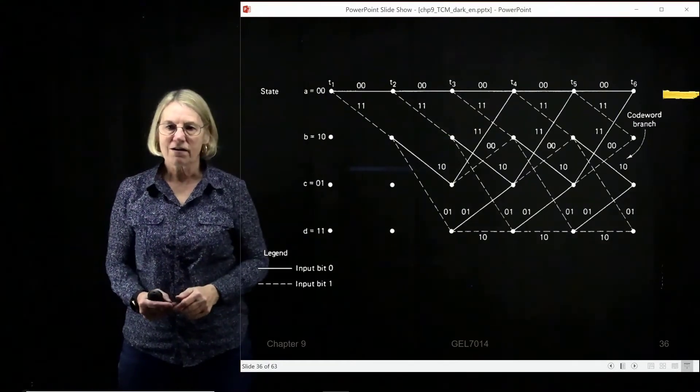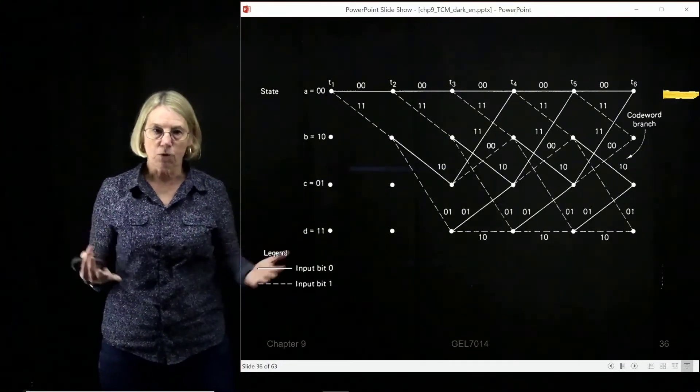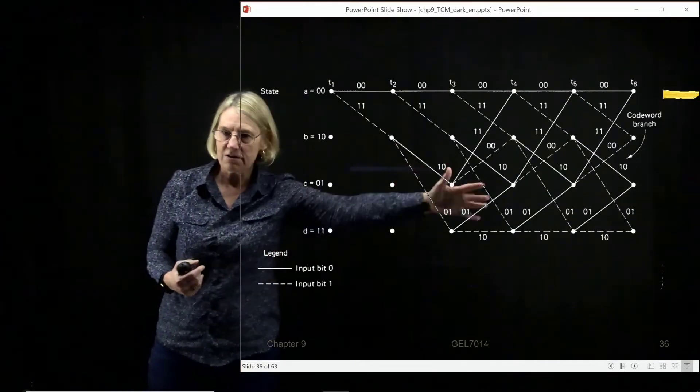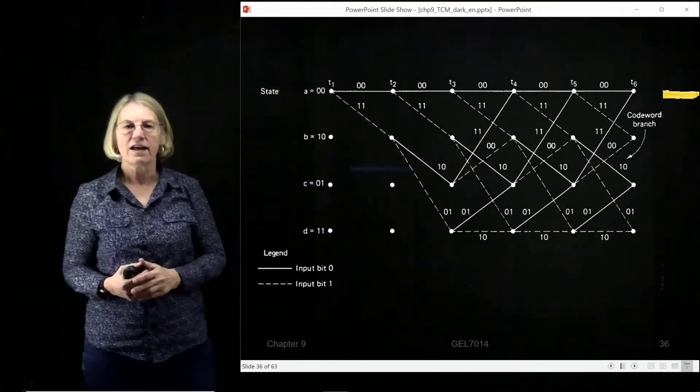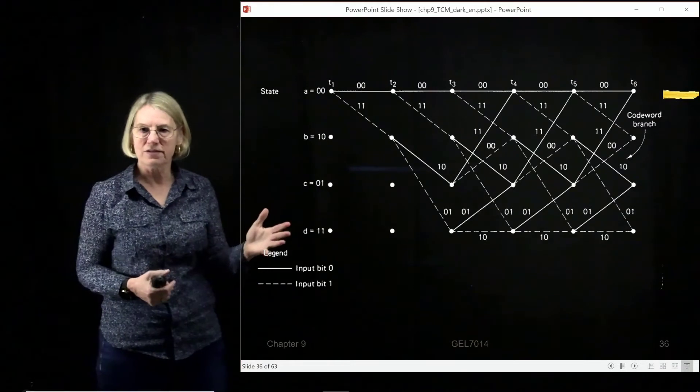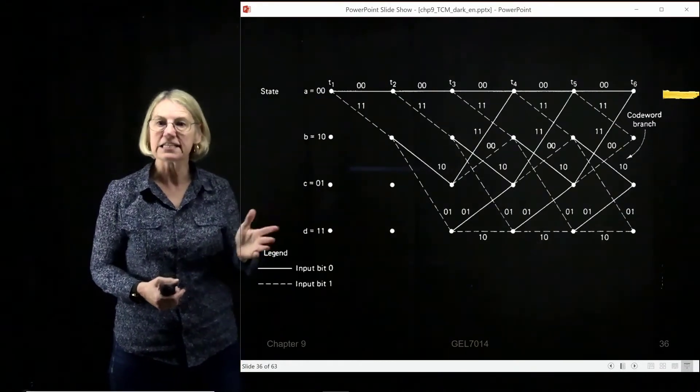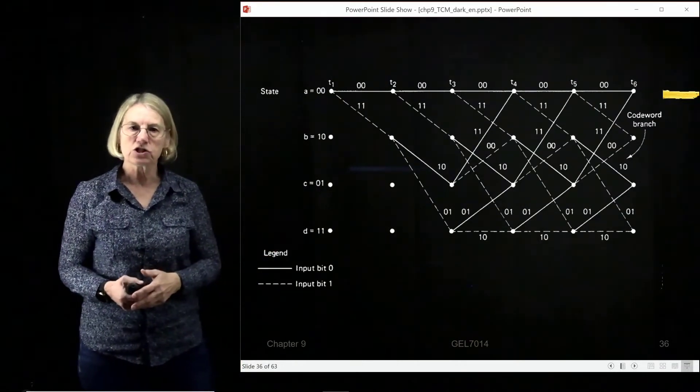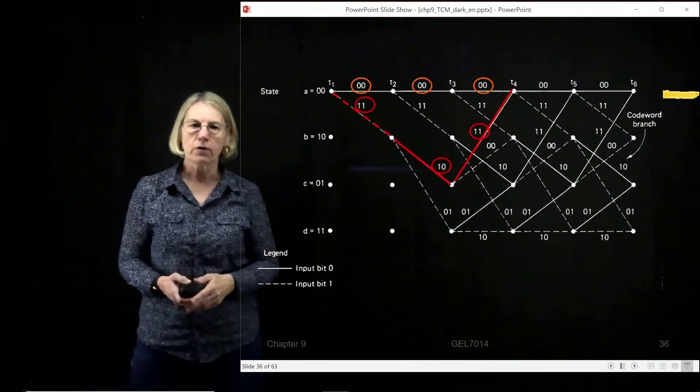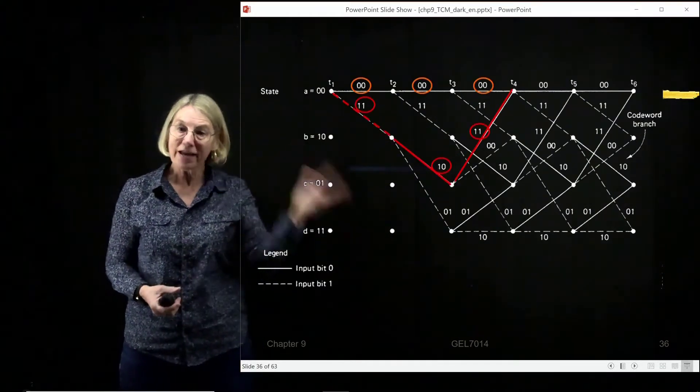So I've taken our convolutional encoder that we've seen before, and I've produced here the trellis. And we're going to be using this trellis to find the free distance. And in order to do that, I'm going to have to modify this, right?